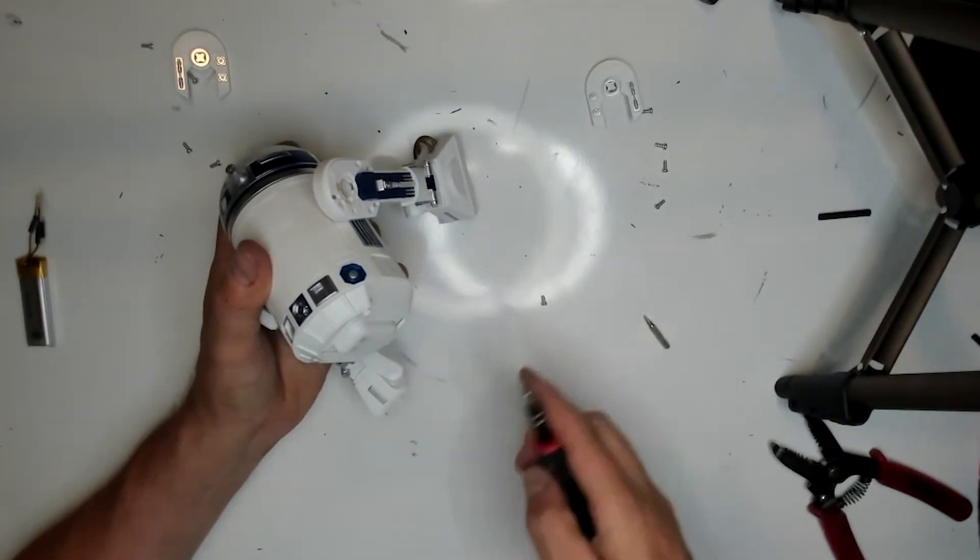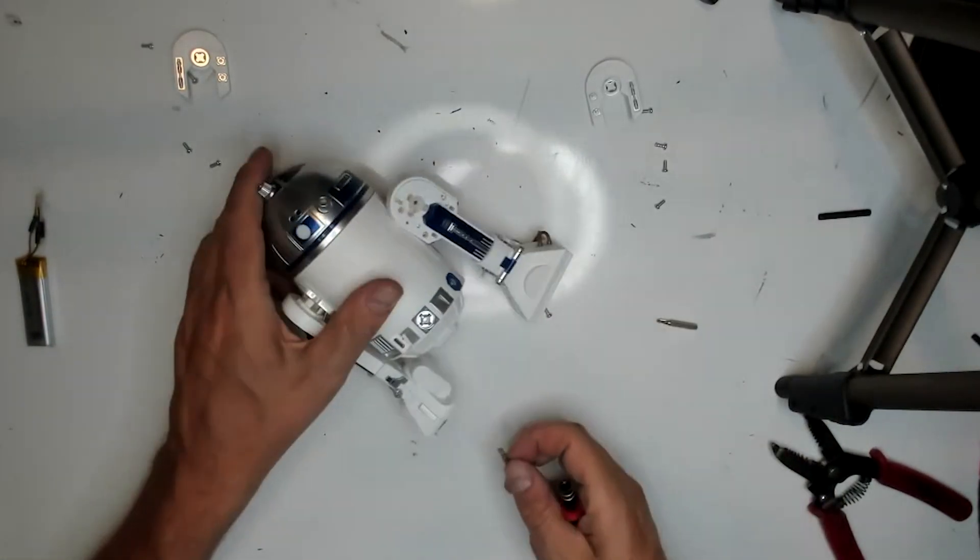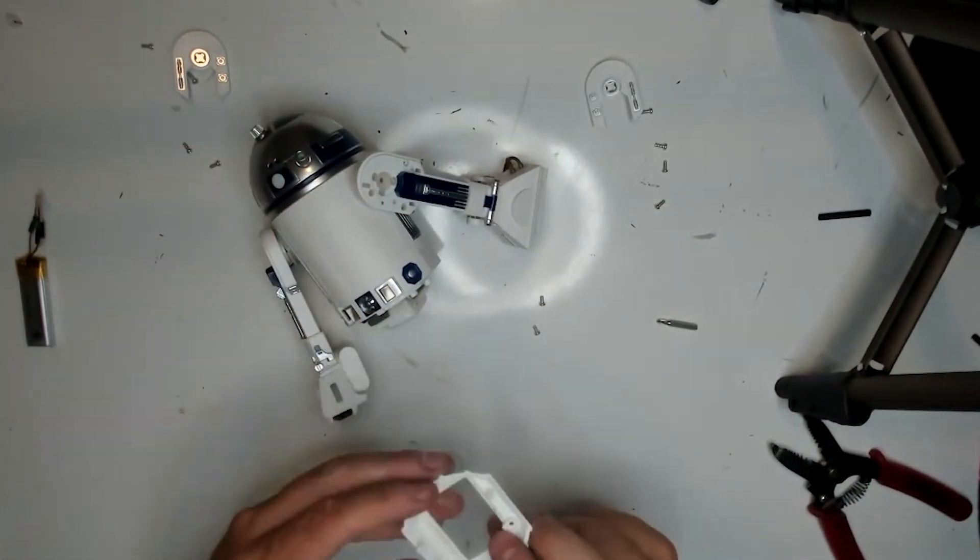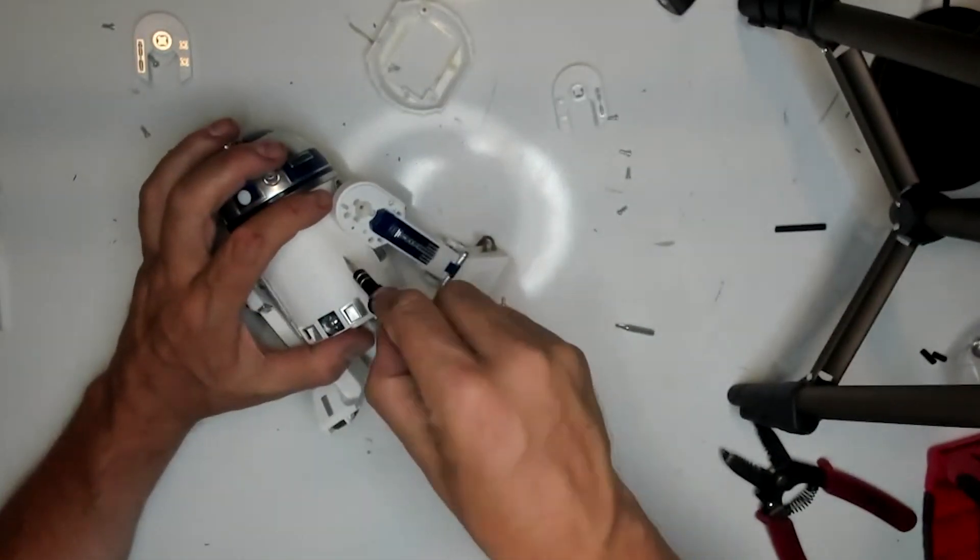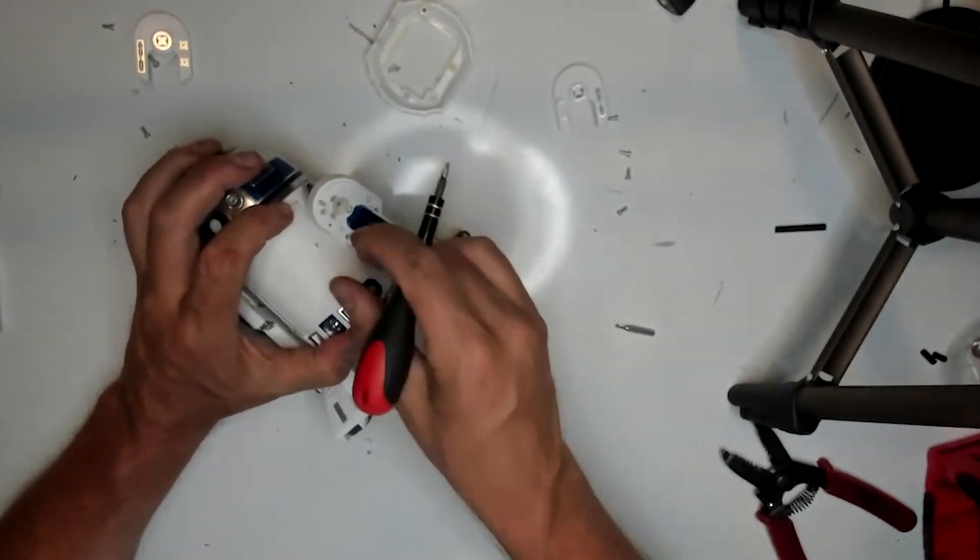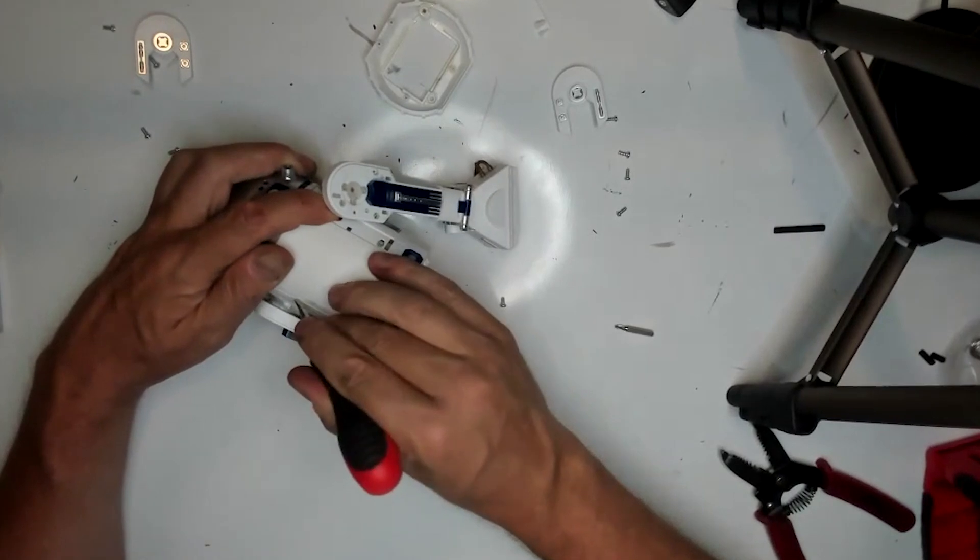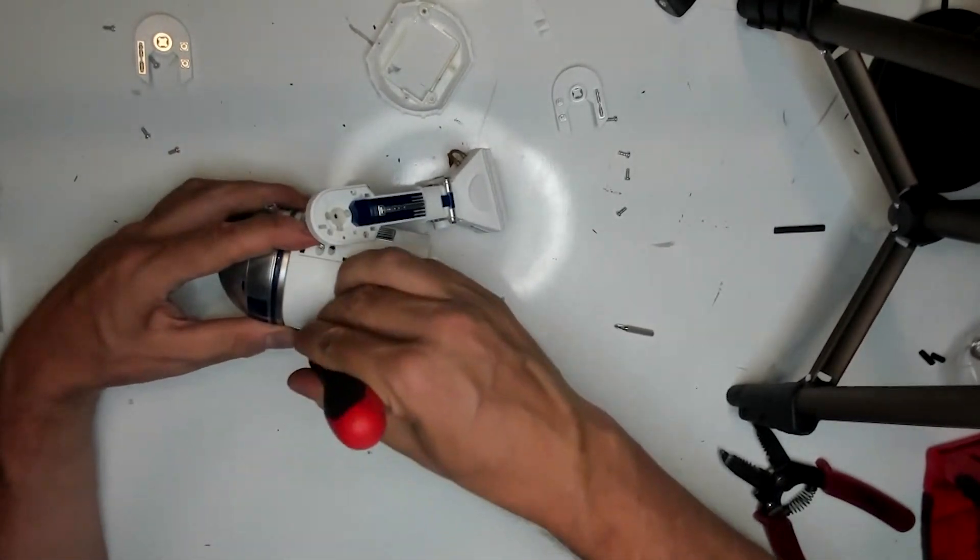Remove the two screws on the base and pop off the plate on the bottom, set it aside. There are two plates on the back that need to be pried off and set aside, and so just pop them off, then remove the screw under each one. There's only one per side.